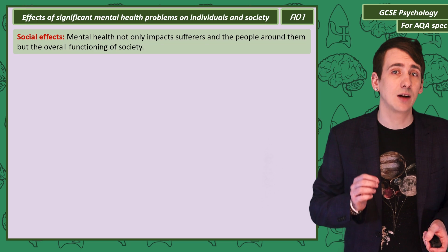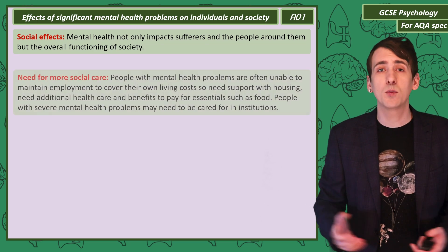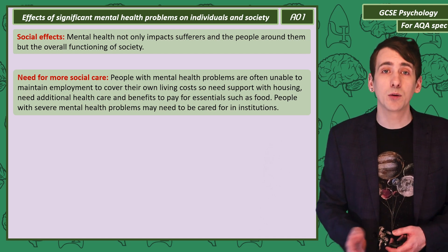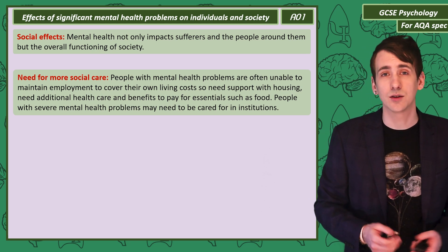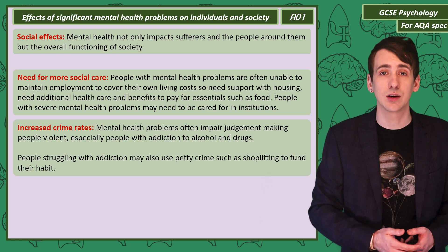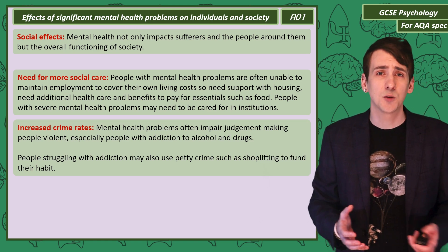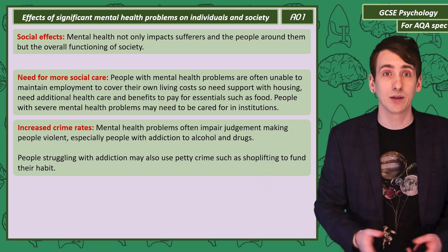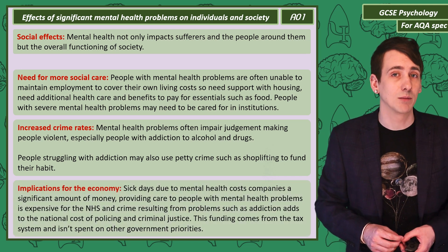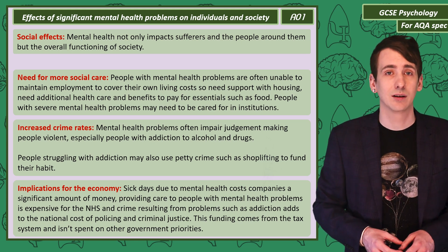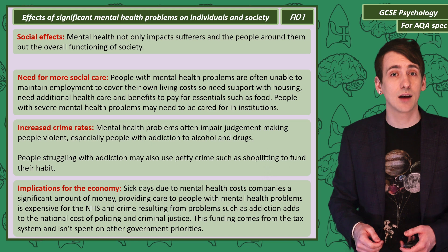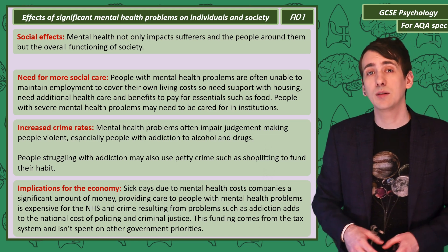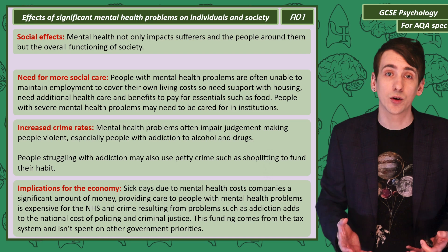Mental health problems also affect all of us in society. People with mental health conditions often need social care, and if their problems stop them from being employed, they need support with housing and other costs. People with severe mental health problems may need to be cared for in an institution. Increased crime rates can result from mental health conditions that impair judgement, particularly violence linked to addiction to alcohol and drugs, and people struggling with addiction might turn to petty crime like shoplifting to fund the habit. There are also negative effects on the economy — sick days cost companies money through lost productivity, supporting millions with mental health problems is expensive for the NHS, and the costs to the police and criminal justice system of dealing with addiction are significant. The funding for all of these comes from the tax system, taking money away from other government priorities.